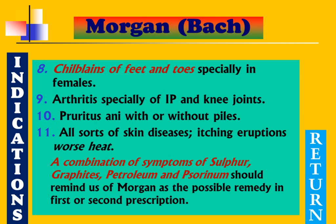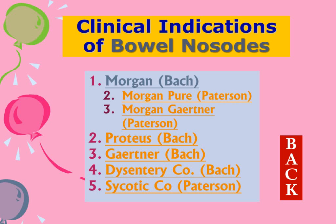We conclude that Morgan Bach presents a combination of symptoms of Sulphur, Graphitis, Petroleum, and Psorinum. In practice, when a patient comes with mixed symptoms and differentiation between these drugs is not easily possible despite proper case taking, this should remind us of Morgan as a possible remedy for the first or second prescription.